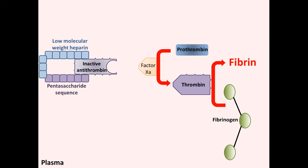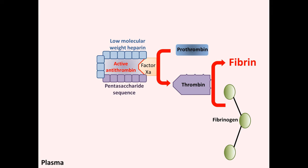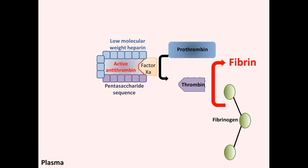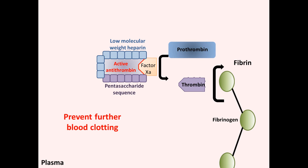Low molecular weight heparin binds to the inactive antithrombin, and this binding causes a conformational change, activating antithrombin. This in turn accelerates the interaction between the active antithrombin and factor Xa, leading to a similar effect: a decrease in prothrombin to thrombin conversion, which further inhibits fibrinogen to fibrin production, and thus prevents further blood clotting.